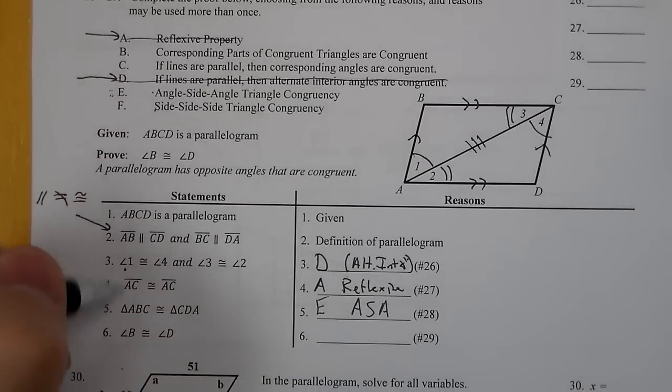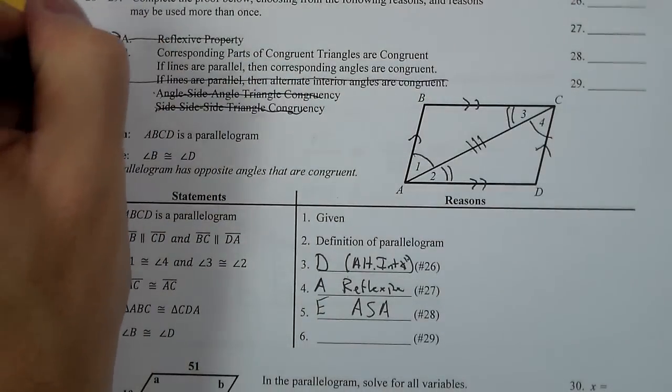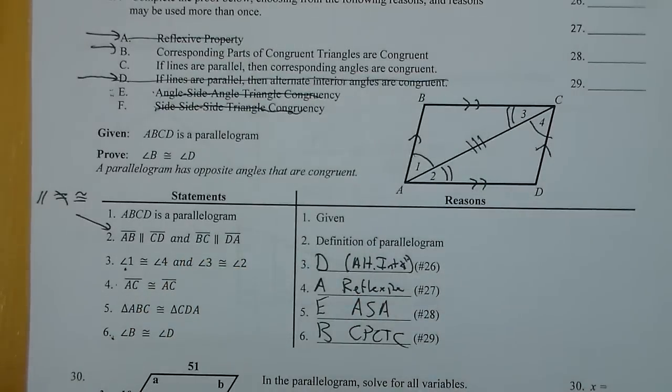Last part. I have triangle congruence, and I need to show that the two parts are congruent. They are corresponding parts of congruent triangles are congruent. So we're going to go with B, and that is CPCTC abbreviated.